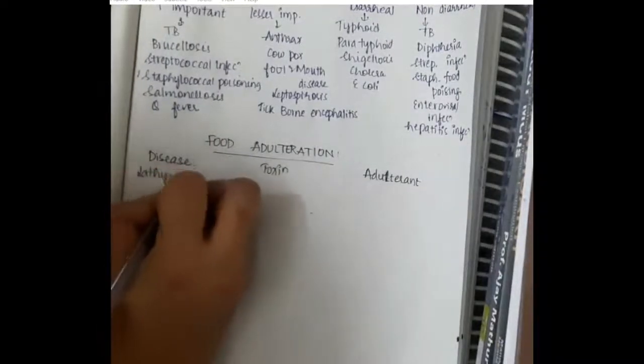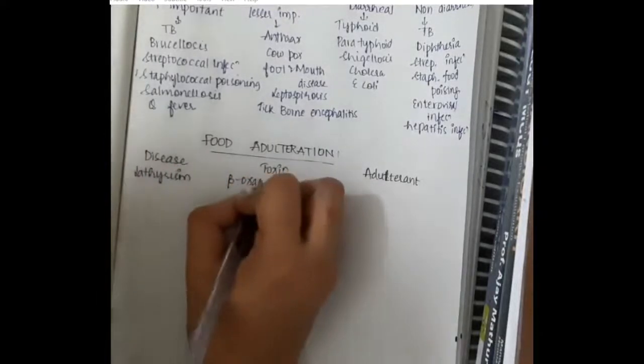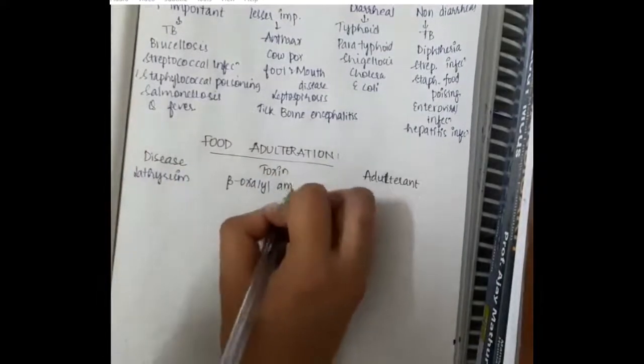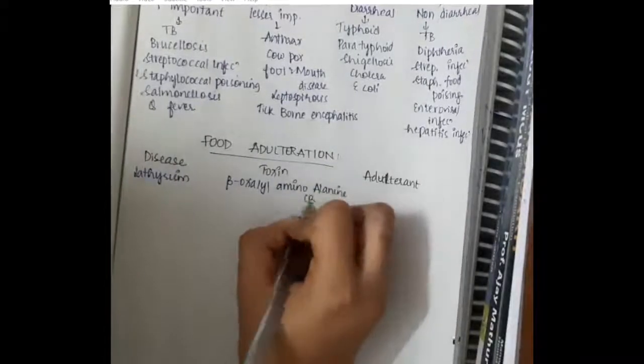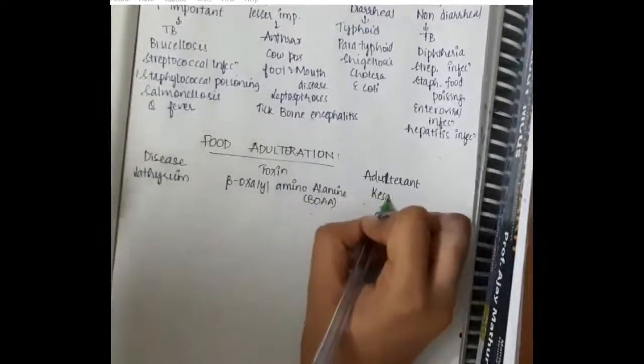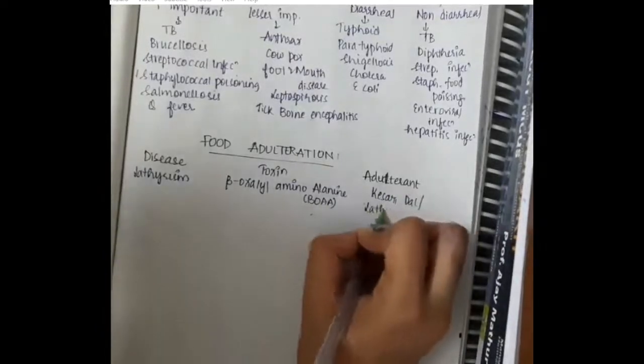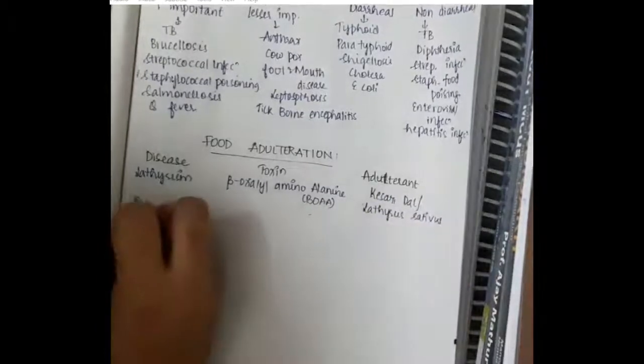Latirism, the disease latirism, the toxin is beta-oxalyl-amino-alanine and the adulterant is kesary dal or lathyrus sativus is an adulterant.